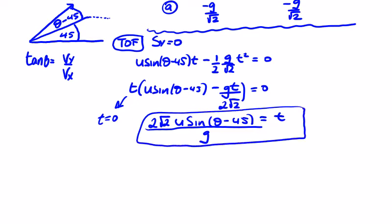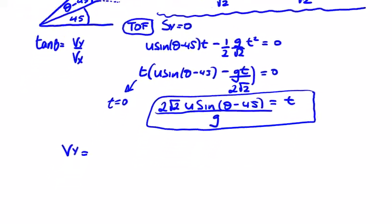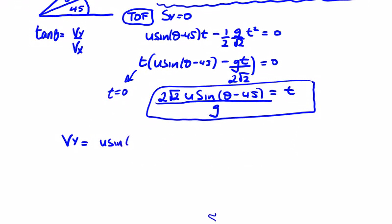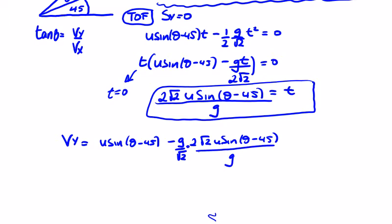Now we put this into the velocity components. For the velocity of y: v_y = u sin(θ-45) + a·t, where a = g/√2 and t = 2√2·u sin(θ-45)/g. The g's cancel and the root 2's cancel, leaving u sin(θ-45) minus 2·u sin(θ-45), which gives minus u sin(θ-45) for the velocity of y.